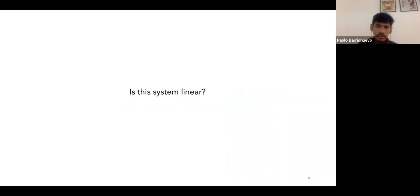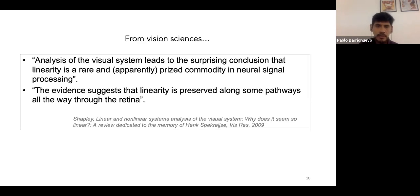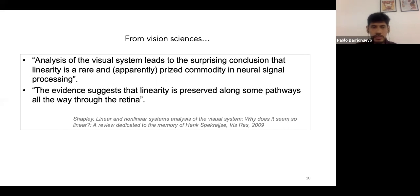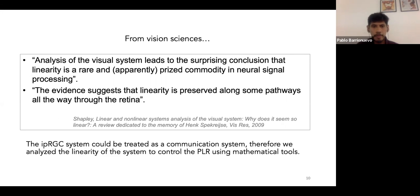One of the important questions in the engineering field about systems is whether those systems are linear or not. From vision sciences, we know that analysis of the visual system leads to the surprising conclusion that linearity is a rare and apparently prized commodity in neural signal processing. However, the evidence suggests that linearity is preserved along some pathways throughout the retina. So the IPRGC system could be treated as a communication system, and we analyzed the linearity of the system controlling the pupil light reflex using mathematical tools.